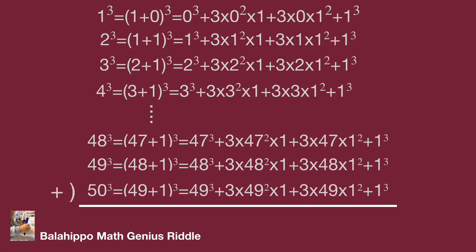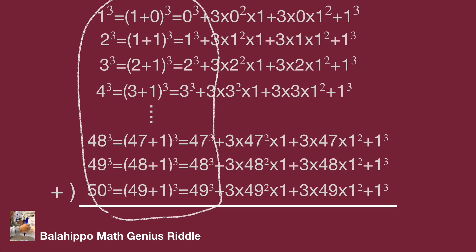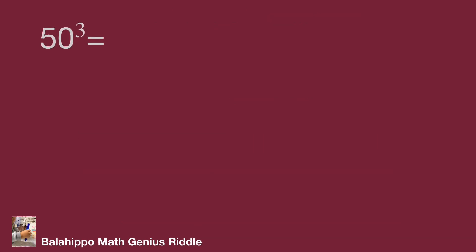Next step: sum all of these equations, from 1 cubed, 2 cubed, 3 cubed to 49 cubed and 50 cubed. I'm going to divide it into several sections. The first section checks the number-cubed terms on both sides of the equations. We can easily eliminate values on both sides — such as 1 cubed, 2 cubed through 48 cubed, and 49 cubed. Therefore, on the left side of the equations, only 50 cubed remains. Mark 50 cubed on the left side of the equations.